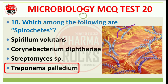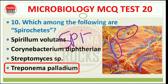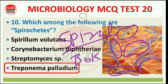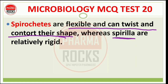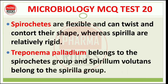Treponema pallidum की characteristics: वो spiral जैसे होते हैं — जैसे book की spiral binding पर ring लगी होती है. Spirochetes are flexible and can twist and control their shape. Spirilla are relatively rigid and cannot be twisted. Treponema pallidum belongs to spirochetes, while Spirillum volutans belongs to the spirilla group. ये दो examples खास याद रखने हैं.